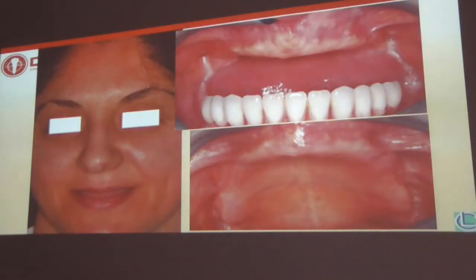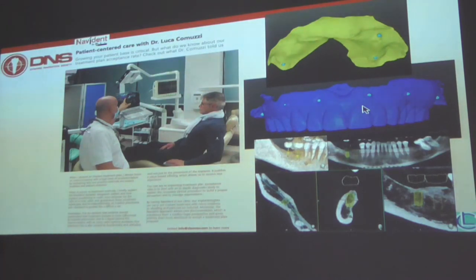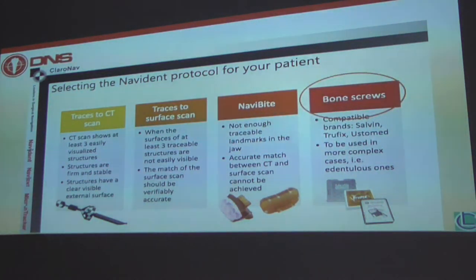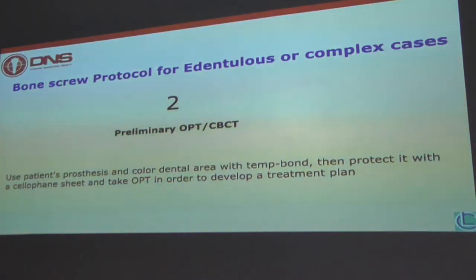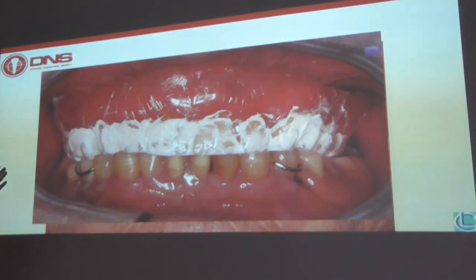The first point is anamnesis. I explain everything to the patient and show them the planning — what placing an implant means. Not only drilling the bone, but placing an implant means you have something in your head about where the tooth should be, according to the prosthetic plan. When I don't have landmarks to trace, I choose bone screws. I use a preliminary OPT — because if a patient like this comes to your office and you have no references, you just have the denture rotation. Some information comes even from the old denture rotation.